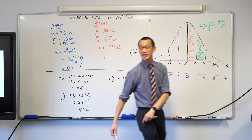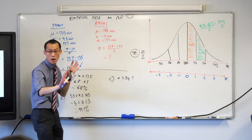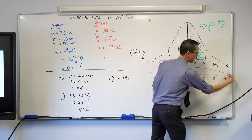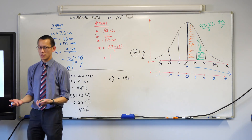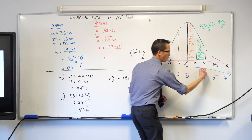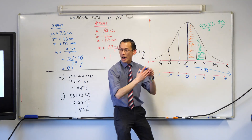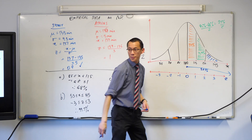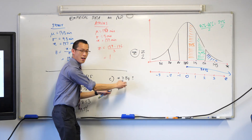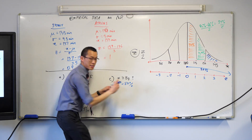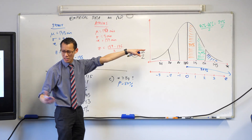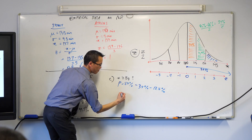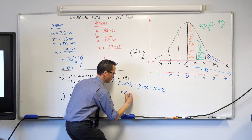Underneath the probability density function, the whole thing adds up to 100%. So if I go from the middle all the way to the right and never stop, that's 50%. The part I'm interested in is the portion of that 50% that's not the 34% and not the 13.5%. To work out this answer, I need 50% minus those two numbers: 50 minus 34 minus 13.5. What do you get? Two point five percent.